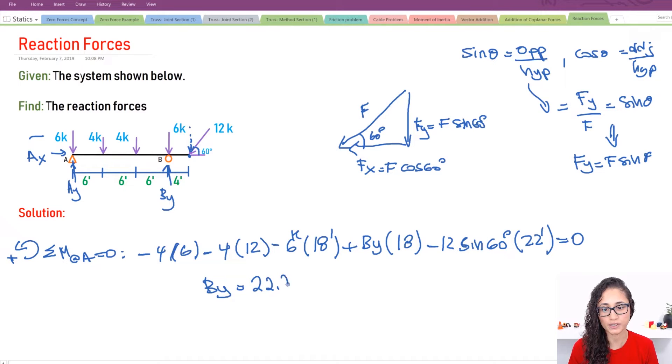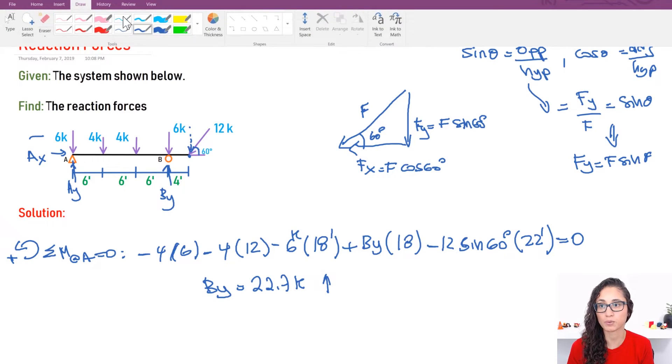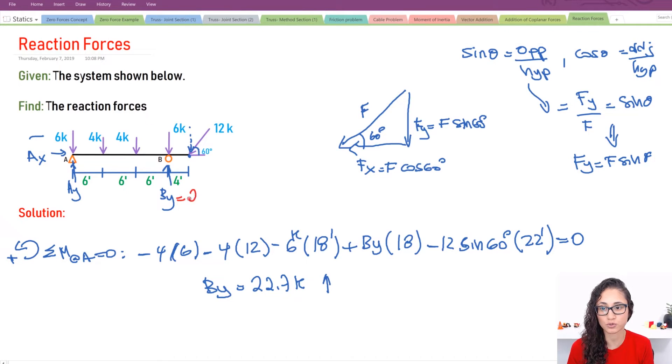So now we're going to solve for By. 22.7 kips. And this is positive, which means it's going up. So the direction that we picked is correct. So this is my By. So let me write it in red. So I have 22.7 kips. So that's By.